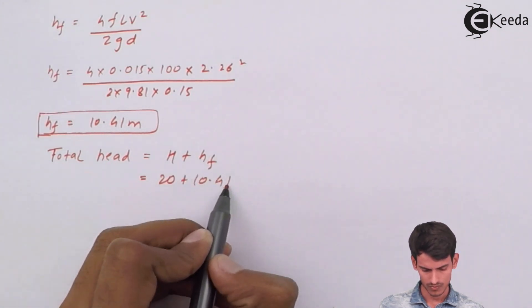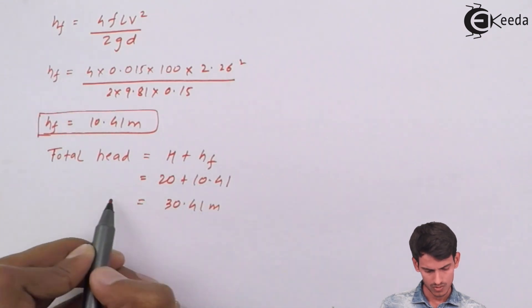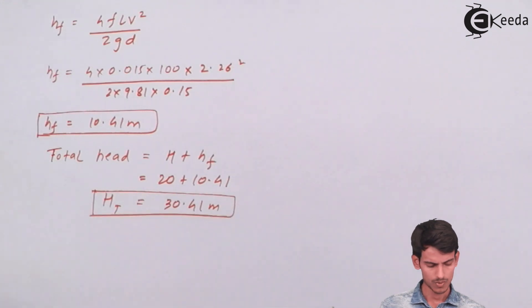Now we've got the value of total head. Let's use the formula of overall efficiency and we can get the value of power that is developed.